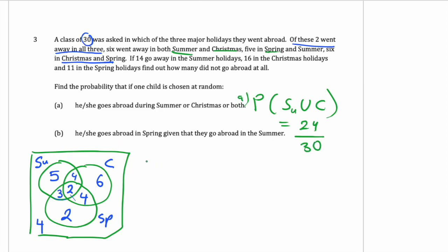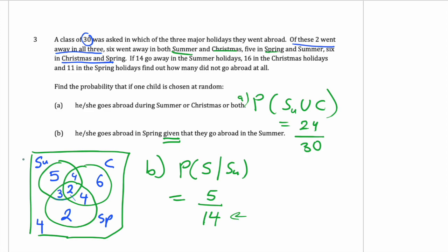For part B, find the probability that a student goes abroad in spring, given that they go abroad in summer. Watch out for that word 'given' — it means P(spring | summer). We look only at the summer circle, so the denominator becomes 14. Of those 14 summer students, 5 also went away in spring. So the probability is 5 out of 14. With conditional probability, the denominator always changes because we're narrowing down to a specific section.